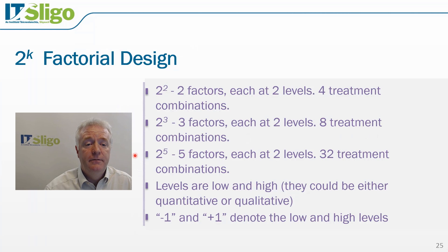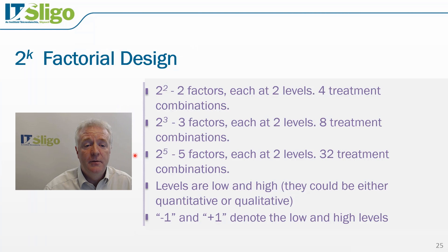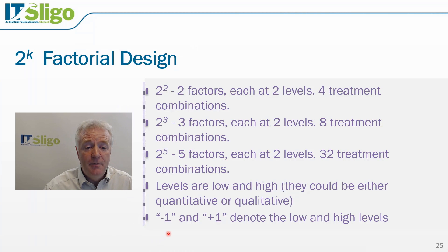Taking the example of 2 to the power of 5, we can evaluate five factors each at two levels, giving 32 treatment combinations. In a two-level design, the levels are referred to as high and low, which can be quantitative or qualitative. More commonly, the notation minus 1 and plus 1 denotes the low and the high level respectively.